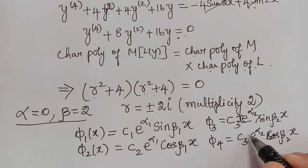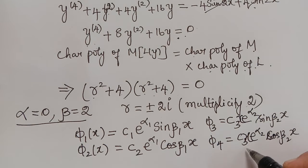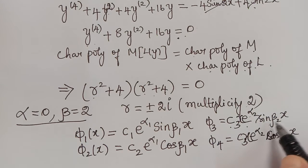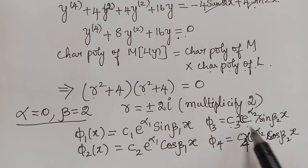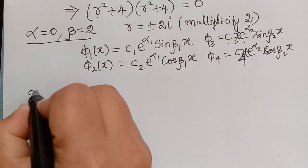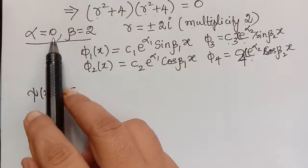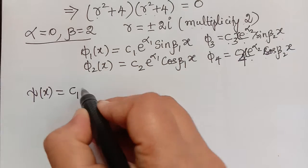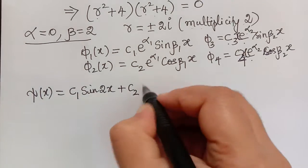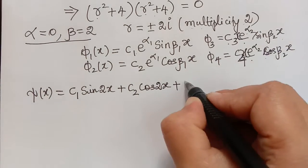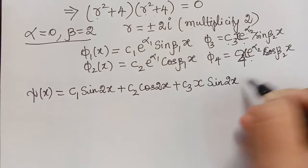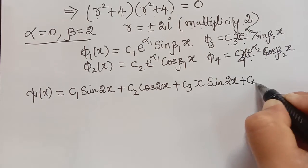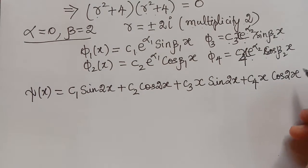For repeated imaginary roots of multiplicity 2, we multiply the corresponding solutions by x. So φ₃ = c₃·x·e^(α₂x)·sin(β₂x) and φ₄ = c₄·x·e^(α₂x)·cos(β₂x). Since α = 0, the general solution ξ(x) = c₁sin2x + c₂cos2x + c₃x·sin2x + c₄x·cos2x.